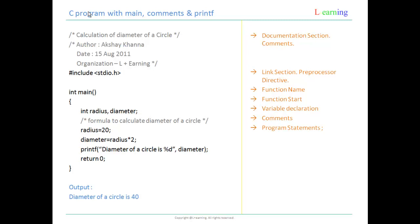Then radius equals 20 and diameter equals radius into 2 are the program statements or C instructions. Once we have calculated the diameter from the radius value, we need to write the output to the screen using printf, which is available in stdio.h. Here we have written 'diameter of a circle is' as text, followed by %d which prints the integer value of diameter. At last, we have written return 0 — since main returns an integer, returning 0 means success; any other value indicates failure. The closing curly bracket signifies that the function ends here. This is the way we write any C program — we have seen a program with main, comments, and printf.